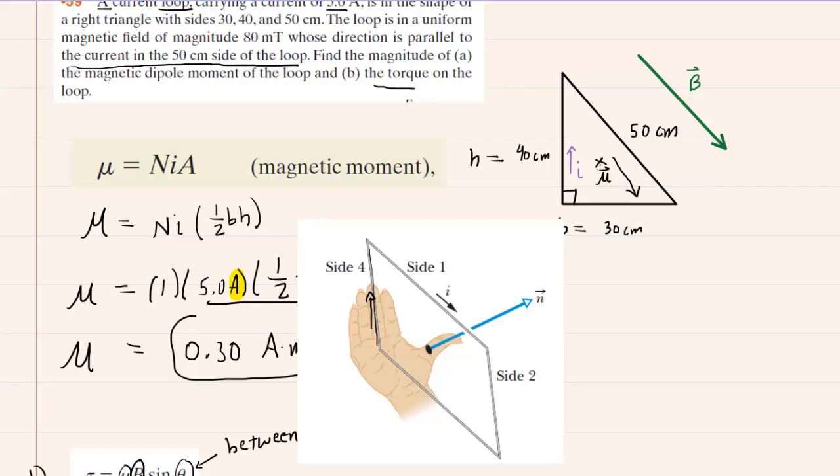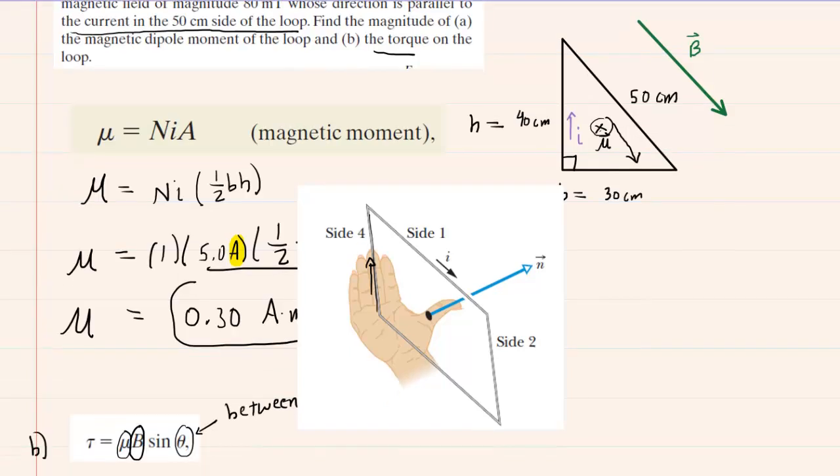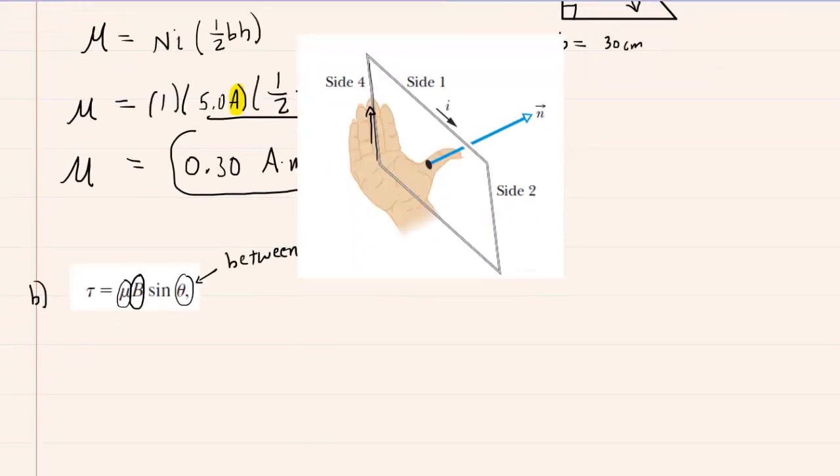It's basically the angle between a Z axis, which is where mu is pointing, and then this magnetic field, which is again pointing down and to the right. So the angle between that Z axis and essentially an XY plane, which is where the magnetic field is pointing, is 90 degrees. So we can go back to our equation and begin to plug everything in here.